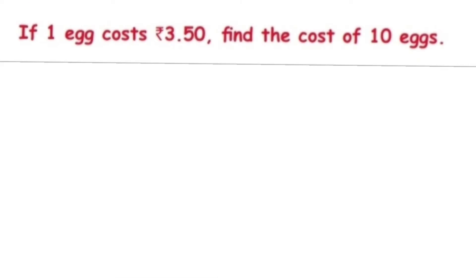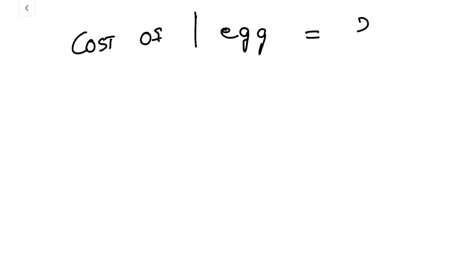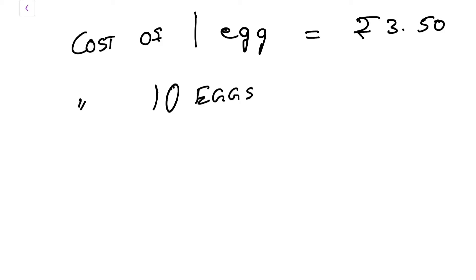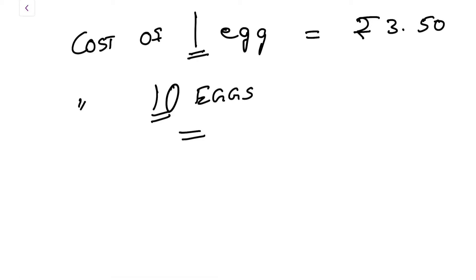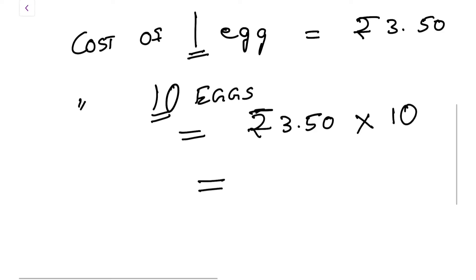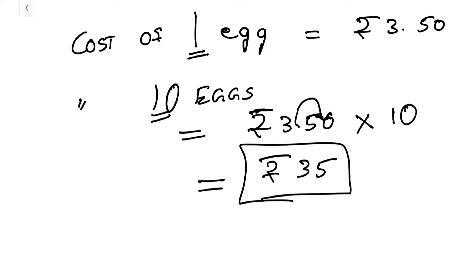Here's another question: if one egg costs 3.50 rupees, find the cost of 10 eggs. They've given the cost of one egg as 3.50. Now they're asking for the cost of 10 eggs. Earlier one was given, now 10 is given, so it's more eggs. More eggs means the cost will increase. When there is more, we multiply. So we take the cost of one egg and multiply by 10: 3.50 into 10. The decimal point moves one place to the right, giving the answer as 35 rupees.